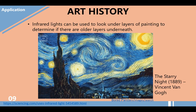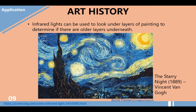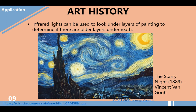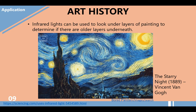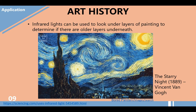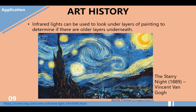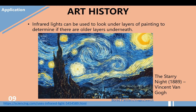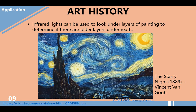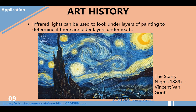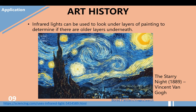Another application of infrared radiation is art history. Infrared lights can be used to look under layers of painting to determine if there are older layers underneath. As you can see, this painting is the Starry Night, painted by Vincent van Gogh in the year 1889.